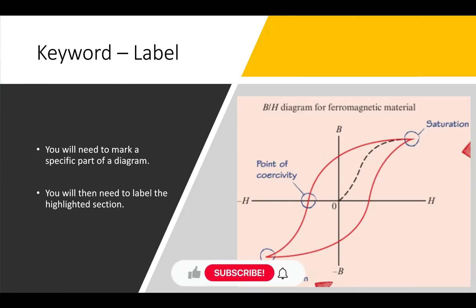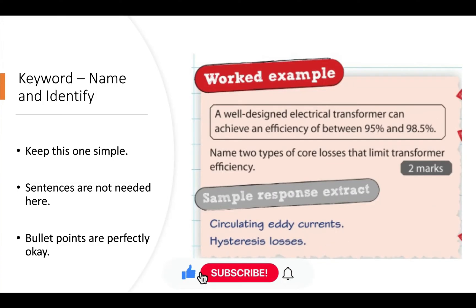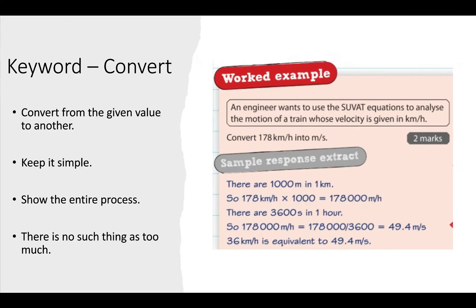Keyword 'name' and 'identify' - keep this one simple. Sentences are typically not needed. Bullet points are perfectly okay or just answers one after the other. For example, I've given a worked example on the right: Name two types of core losses that limit transformer efficiency - circulating eddy currents and hysteresis losses. Simply state what they are and move on.